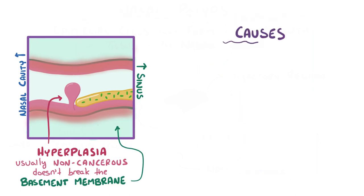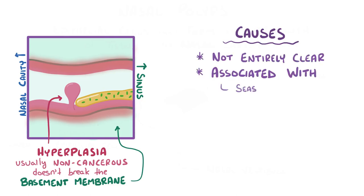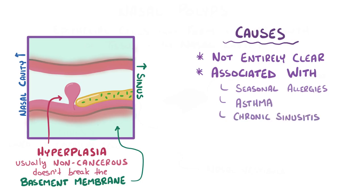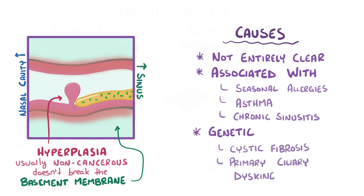The reason the epithelial cells start to grow into a polyp isn't entirely clear, but they're associated with seasonal allergies, having frequent asthma exacerbations, as well as chronic sinusitis. There are some genetic factors that seem to be related as well. For example, individuals with cystic fibrosis and primary ciliary dyskinesia both have a high risk of developing nasal polyps.